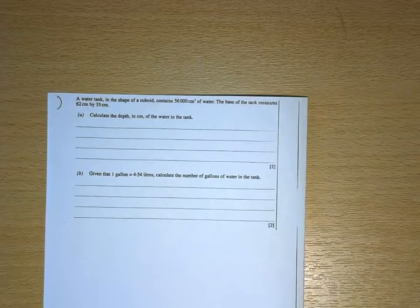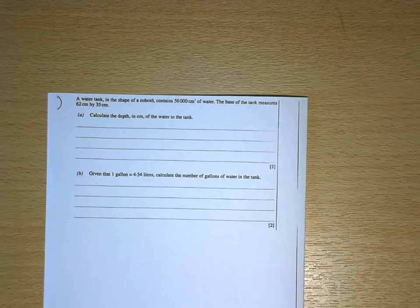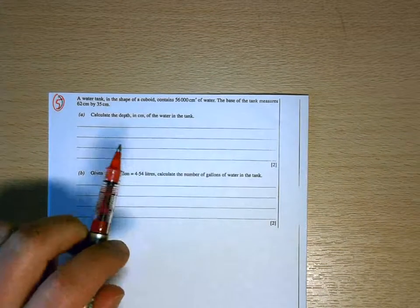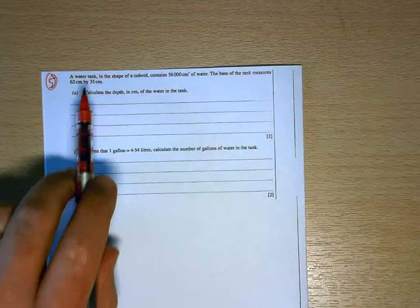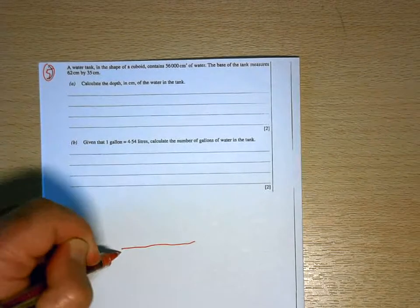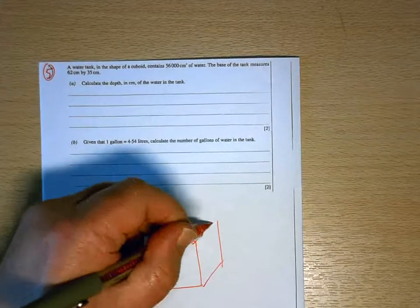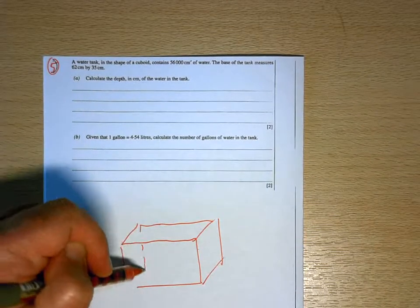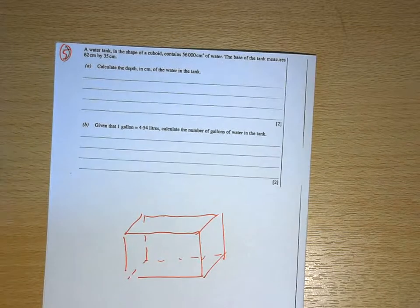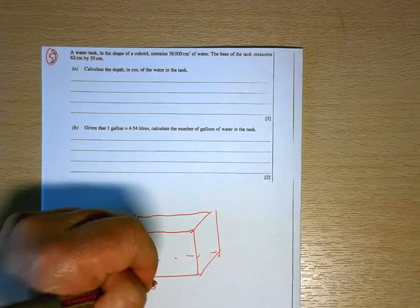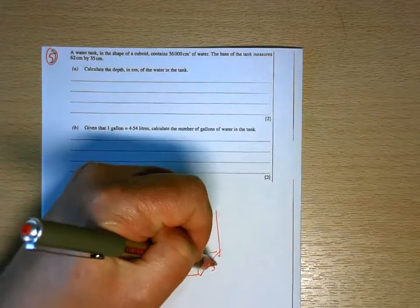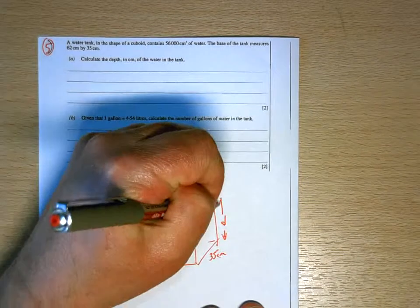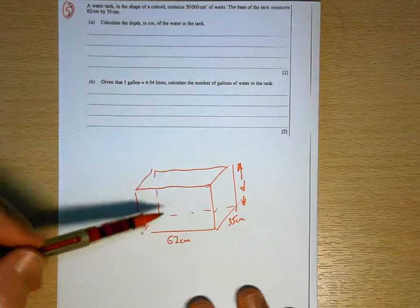Okay, two more questions that we need to take a look at here. Question five, slightly different this one in that first of all it's a volume question. So what we've got here is a tank in the shape of a cuboid. I'll just draw a little diagram underneath just to help with the explanation. And we know that the base of this tank measures 62 centimeters that way and 35 centimeters that way, and we want to know what the depth of the tank is.